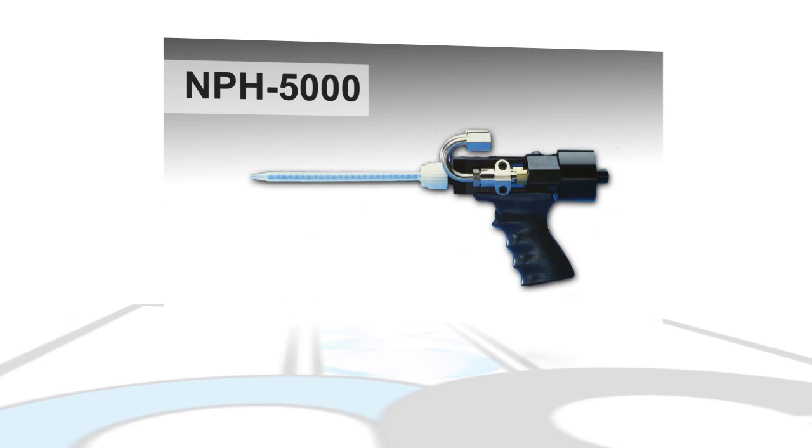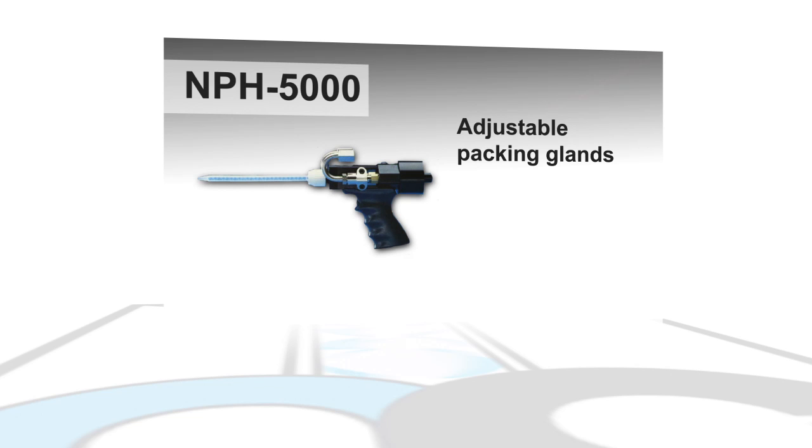The NPH 5000 valve includes adjustable packing glands, as well as a snuff back feature, providing drip free dispensing.